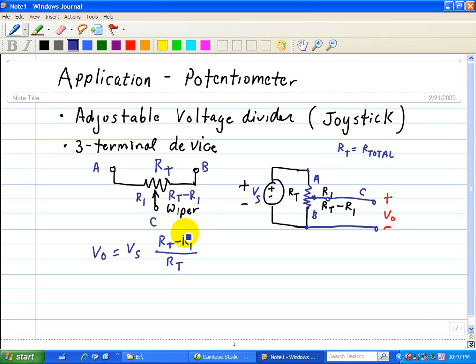So when R1 is 0, that means that this wiper is at the top or at node A, then the voltage is just Vs. So if R1 equals 0, then V0 is equal to Vs.